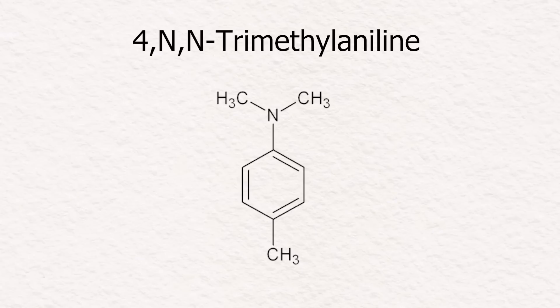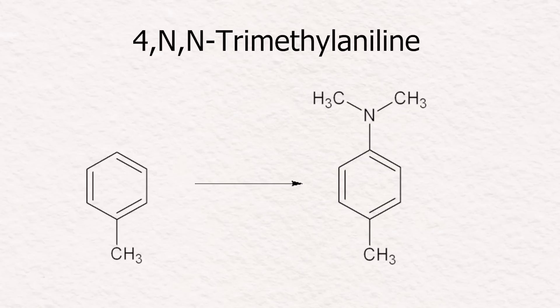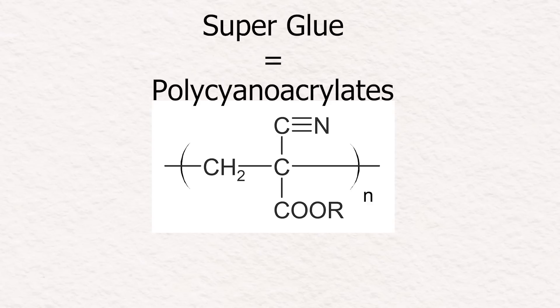In this video, I will be making 4-NN trimethyl aniline from toluene, which is a polymerization catalyst for different types of polymers, specifically cyanoacrylates, which is what superglue is made of.